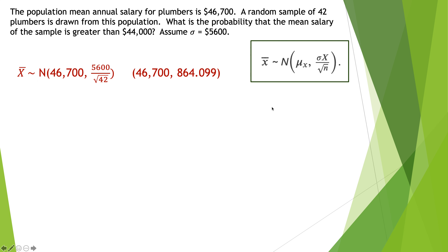Think of this like washing your dishes in the dishwasher and putting them all back in their proper place — so when it's time to prepare the final meal you know where everything is. The average is $46,700, and my standard deviation is $5,600, which goes in the numerator. There's a random sample of 42 plumbers, so I have the square root of 42 in the denominator. $5,600 divided by the square root of 42 is approximately $864.099.